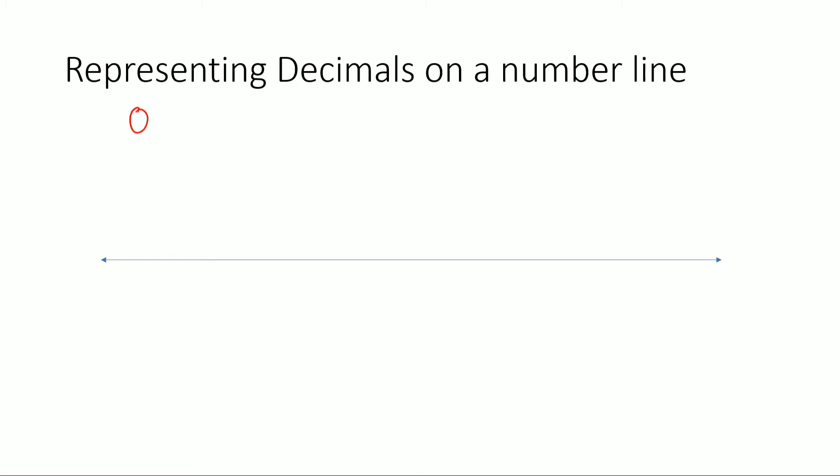For example, if I take 0.6, this is a decimal number because there's a point between 0 and 6. So 0.6 is nothing but 6 parts out of 10 parts as a fraction, right?